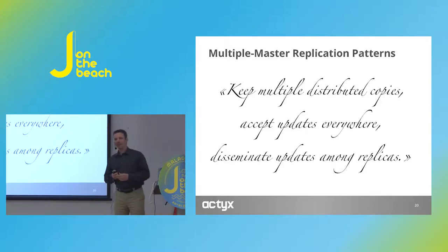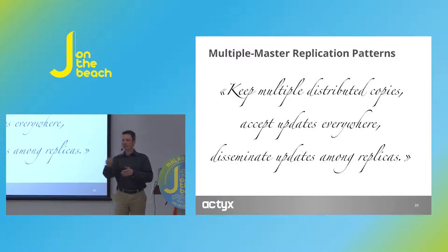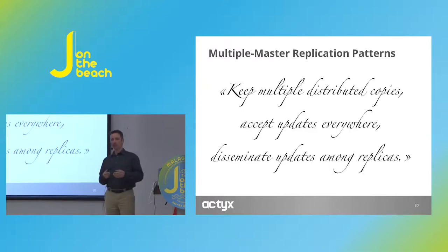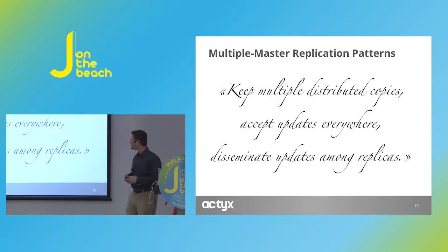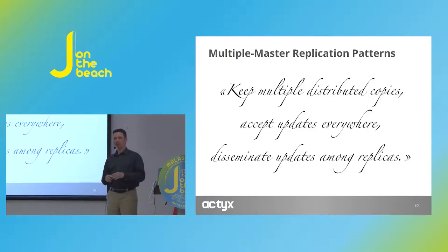Now, multi-master replication patterns. When you go distributed, you want to keep your data safe in multiple locations. But how do you update the data? You might want to be able to contact any replica — any of them should work for updates and reads — and expect everything to be consistent, basically like a single database. That would be multi-master replication, where you keep multiple distributed copies, accept updates everywhere, and the replicas then have the task of making sure that everyone is on the same page.